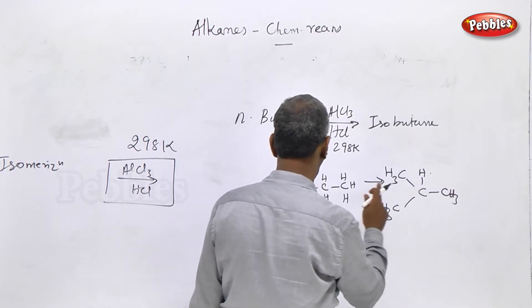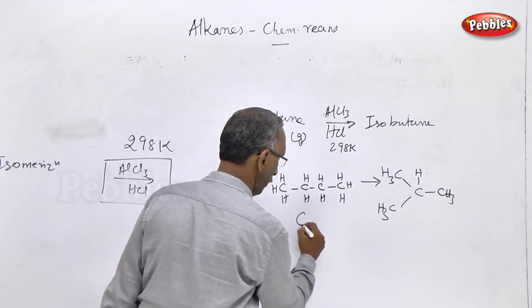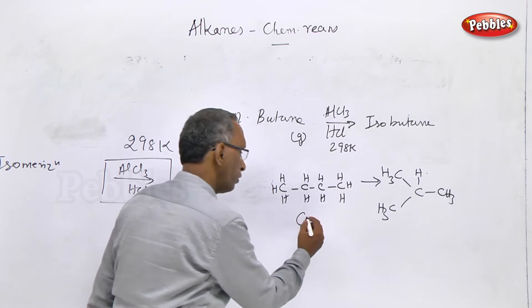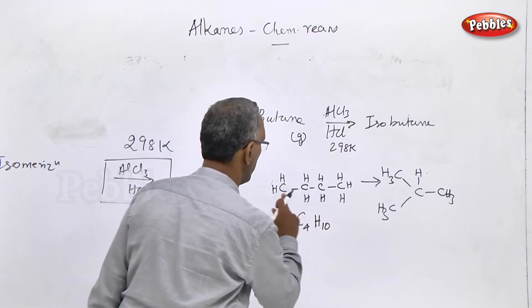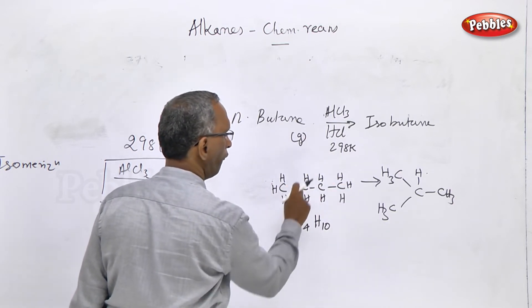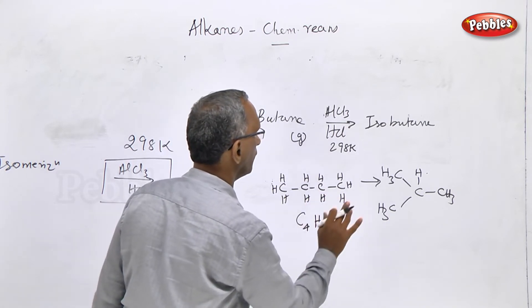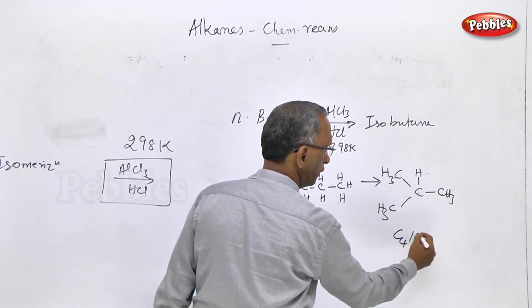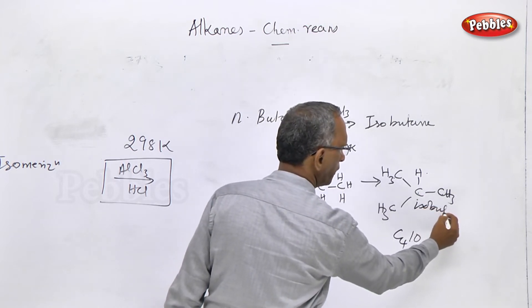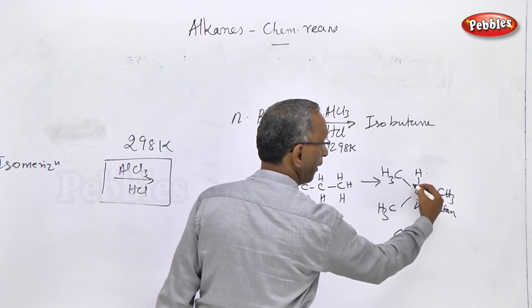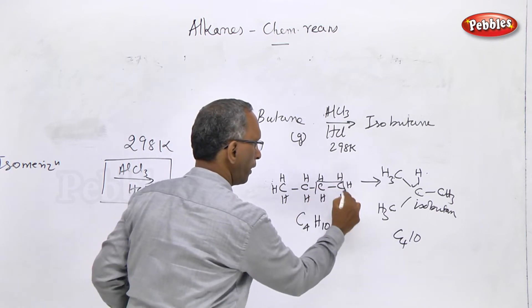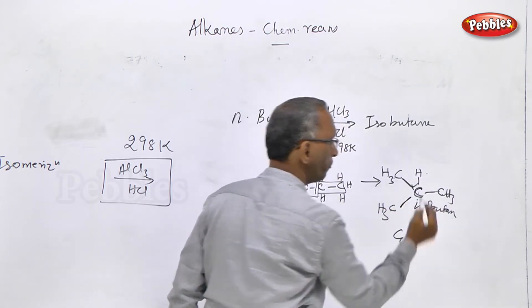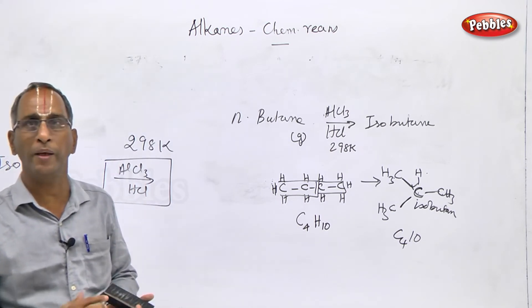When n-butane, which is a gas, is treated with AlCl3 catalyst in the presence of promoter hydrogen chloride at room temperature 298 Kelvin or 25 degree centigrade, n-butane straight chain compound becomes isobutane. Butane is the alkane with 4 carbon system. Using the general formula CnH2n+2: for C4, that's 4×2=8 plus 2 equals 10, so C4H10. N-butane has 4 carbons in a straight chain: C-C-C-C. Isobutane has one carbon atom attached to a central carbon that has the maximum number of carbon atoms attached.